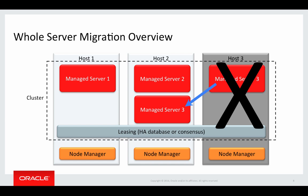For example, JMS persistent messages are tied to a JMS server. With whole server migration, when the server is restarted, the JMS messages on the server become available for processing again. Same for transactions — with whole server migration, the transaction manager in WebLogic Server can pick up where it left off and complete or roll back any pending transactions that were managed by the server. Node managers are the processes that start and stop servers. The migration system calls into node managers to determine the availability of a machine and to start and stop servers when needed.